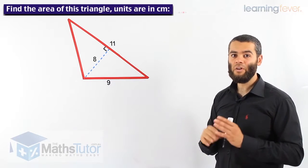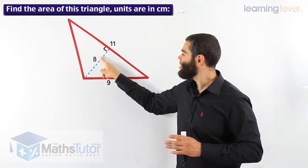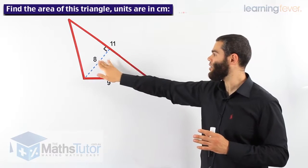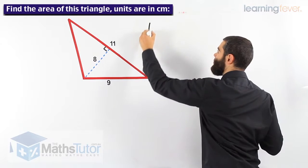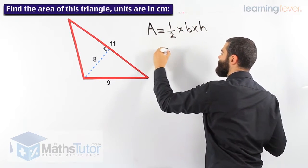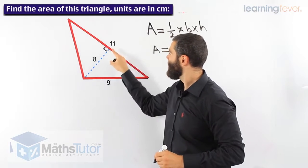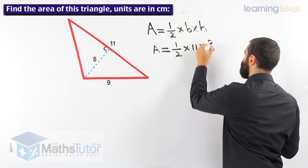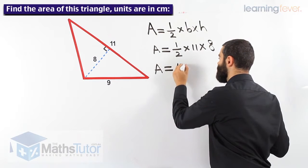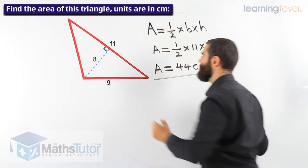The base is 11 and the height is 8. Very important not to get tricked — the side of 9 is not our base because it does not meet the height at 90 degrees. So our base is 11 and our height is 8, meeting at 90 degrees. Now we can work out this triangle using the formula: half times base times height. Half times 11 times 8: 11 times 8 is 88, and half of 88 is 44 square centimeters. That is the total area inside this triangle.